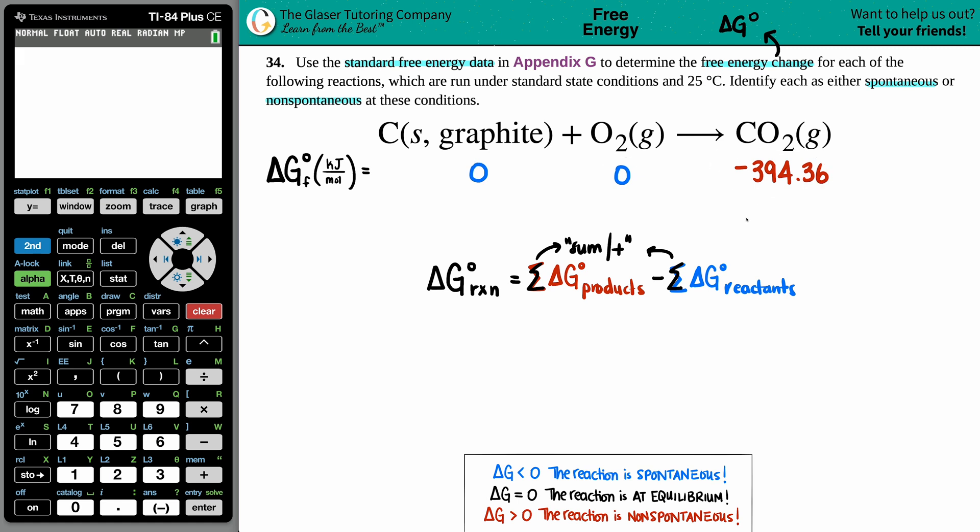Are these values going to be the same? It all goes by your coefficients of the balanced equation. You had no number in front of C, no number in front of O₂, and no number in front of CO₂—that means you have one for each. You always multiply the ΔG value by that coefficient because that's how many moles you have. So you would times zero by one, the other zero by one, and -394.36 times one. In this case, no numbers are going to change, but if you did have a two, you would times whatever number that is by two.